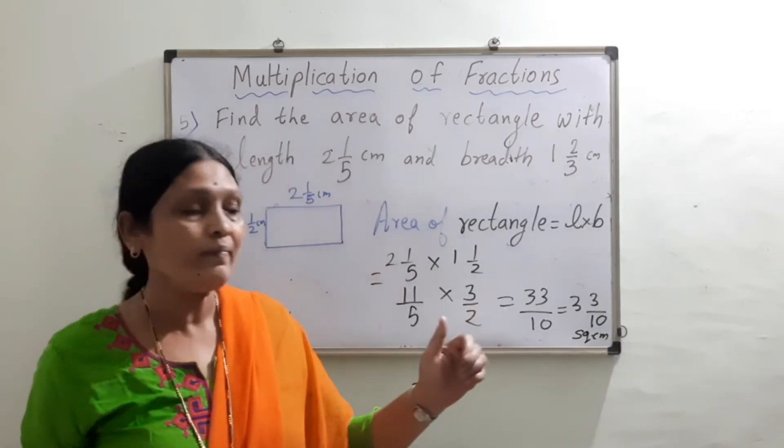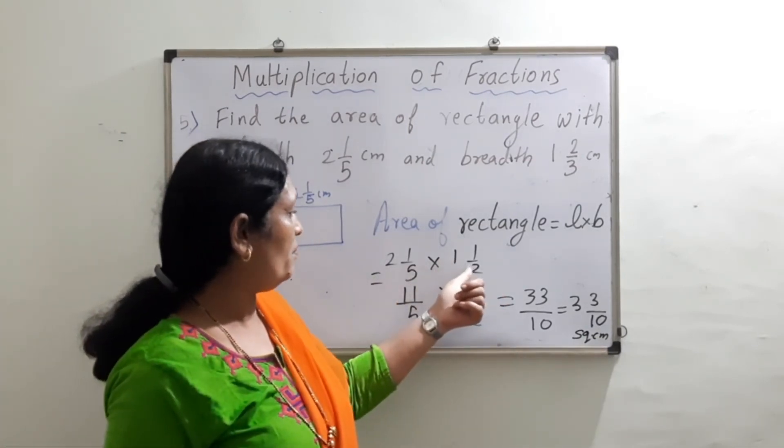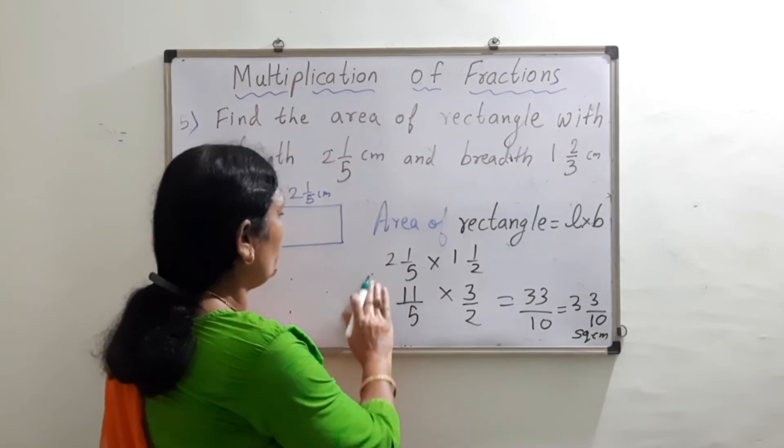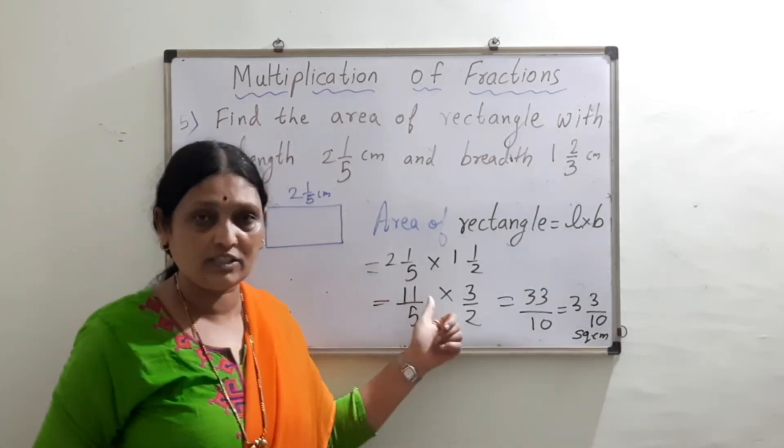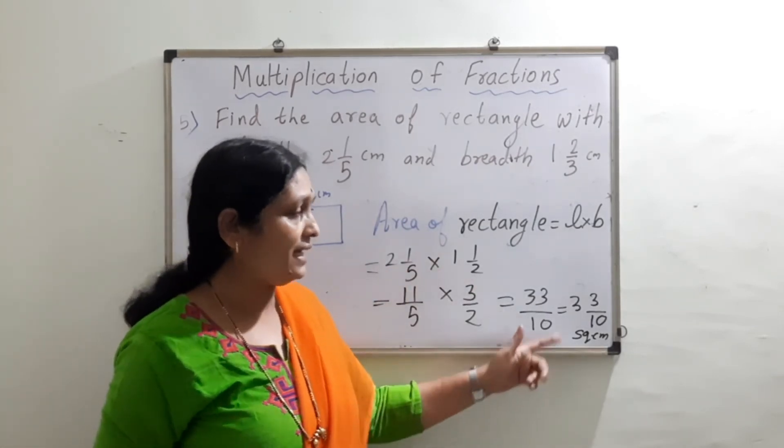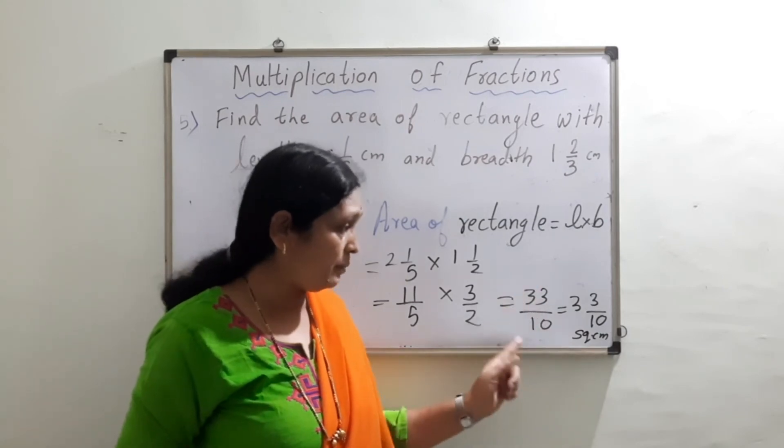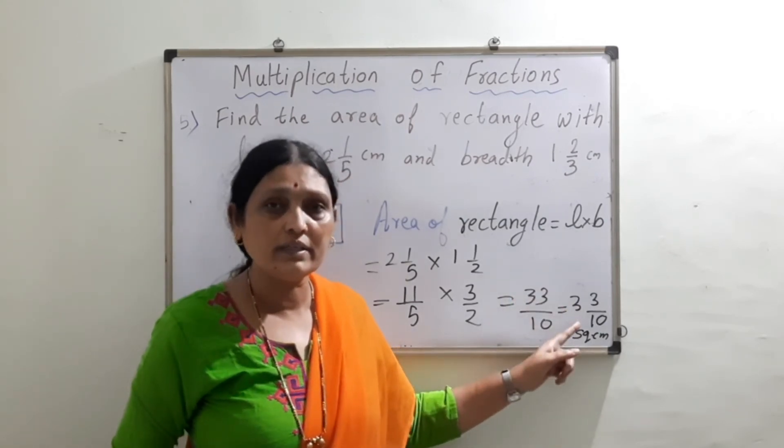So remember, whenever we are multiplying mixed fractions, it is important to convert the mixed fractions into improper fractions. And see that your final answer, if it is coming in improper fraction, you convert that into mixed fraction again.